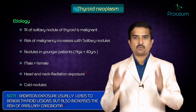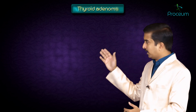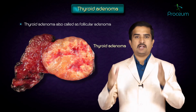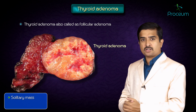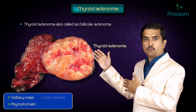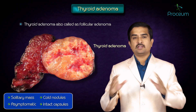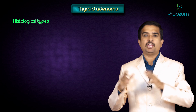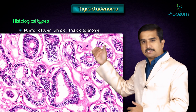Now let us discuss benign lesions. The first is thyroid adenoma, also called follicular adenoma. It appears as a solitary mass where the majority of patients are asymptomatic, with cold nodules present and intact capsules. There is no change in the thyroid capsule. The histological types include: first, the normal follicular type, also called the simple type.